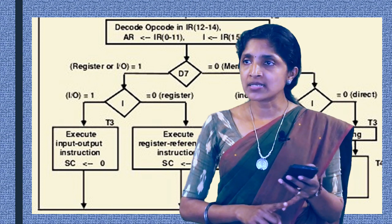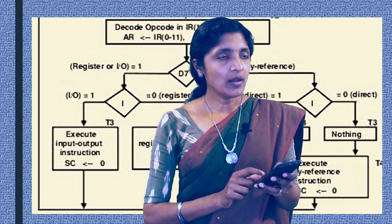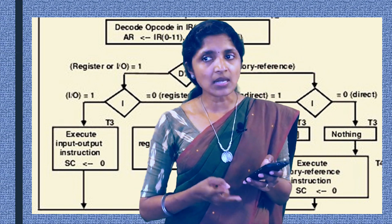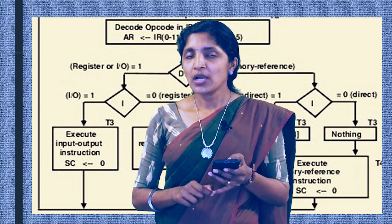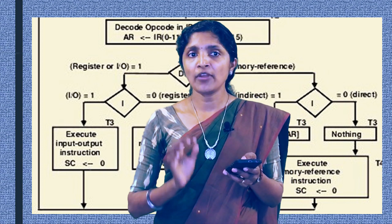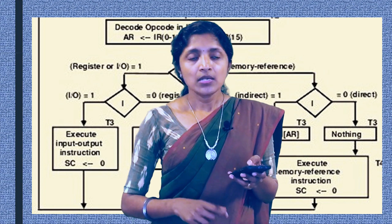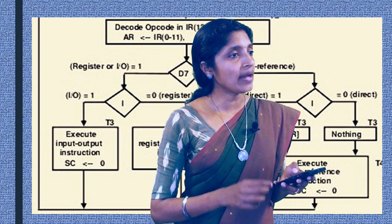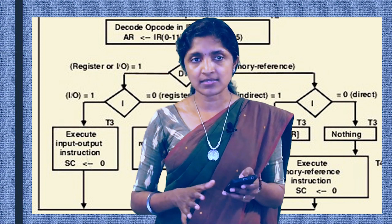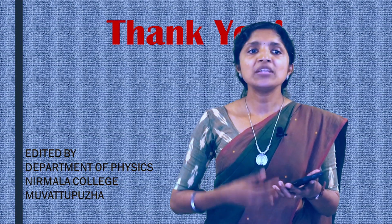Next, we come to the mode bit, i. Whenever the mode bit is 1, we determine that it is an input-output operation. Similarly, when the mode bit is 0, we say that it is a register reference instruction. Memory reference instructions are also of two types: direct address instruction and indirect address instruction. In a direct address instruction, the memory location contains the operand itself. Whereas in an indirect address instruction, the memory location contains the address of the data. When the mode bit i is 1, we say that it is an indirect instruction. When the mode bit is 0, we say that it is a direct address instruction. Now we have determined the type of instructions, and these instructions will get executed depending on their type.